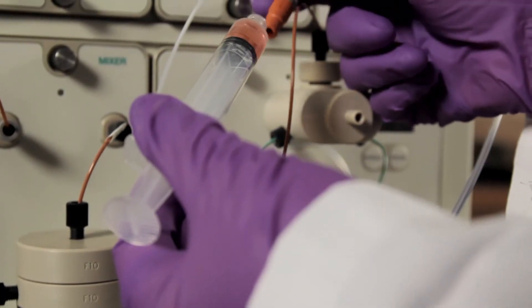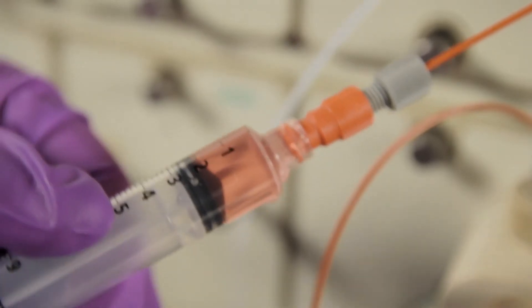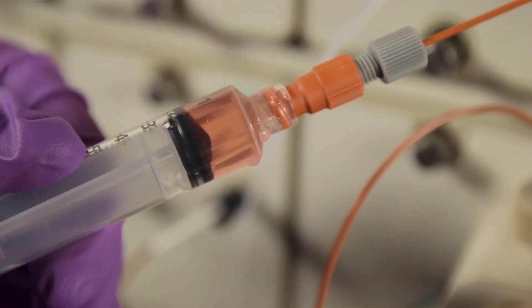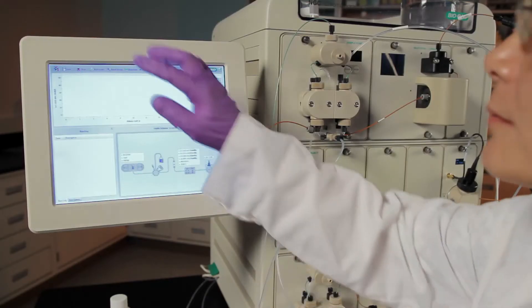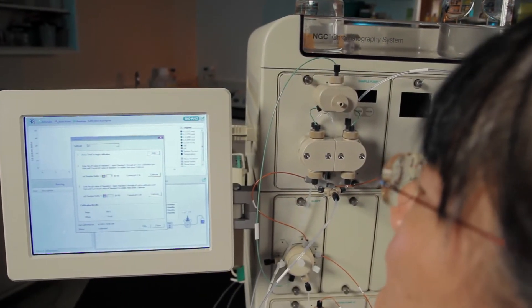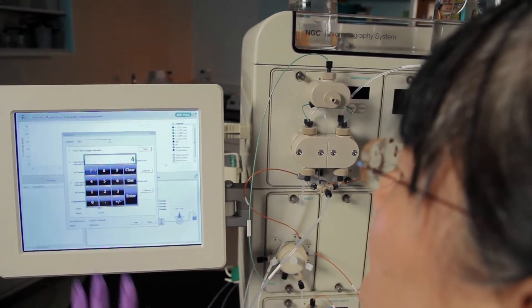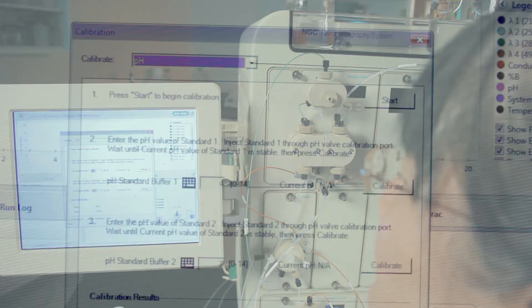Now, using a syringe with a luer fitting, inject 2 mLs of the first pH calibration solution into the CAL-IN port. Using the NGC touch screen, select Calibrate on the Chrome Lab drop-down menu. Select pH on the drop-down list and follow the steps in the pH calibration dialog box.